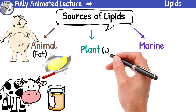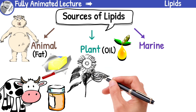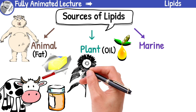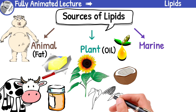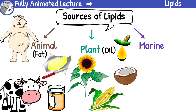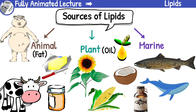Plants synthesize oils and store them in seeds, such as sunflower oil, coconut oil, and corn oil. These oils are used as vegetable oils or ghee for cooking and other purposes. Marine animals like salmon and whales are also a source of oils. These oils are used as medicines, like cod liver oil, that reduces inflammation in the body and helps to lower the risk of heart disease and stroke.